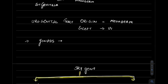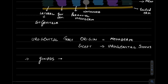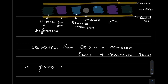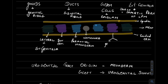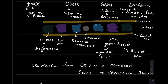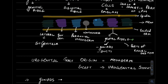Except for the urogenital sinus, which comes from endoderm, the urogenital tract is derived from mesoderm. From the intermediate mesoderm comes the genital ridge, and from the genital ridge come the gonads, ducts, and parts of the renal system. The genital ridge starts forming at the fifth week of gestation.